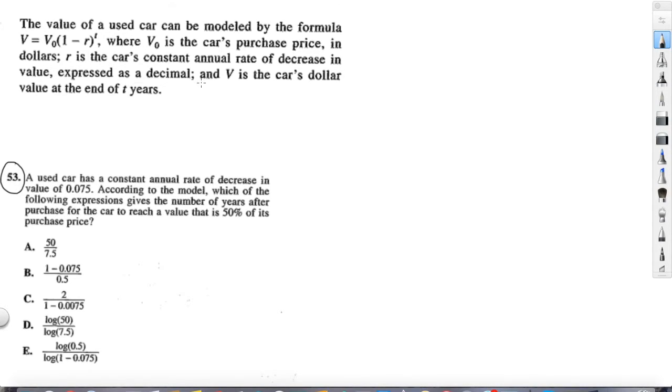This information above was given with a set of three questions, 53 being the third of those three. So let's read that information. The value of a used car can be modeled by the formula given here, where V sub zero is the car's purchase price in dollars, R is the car's constant annual rate of decrease in value, expressed as a decimal, and V is the car's dollar value at the end of T years.